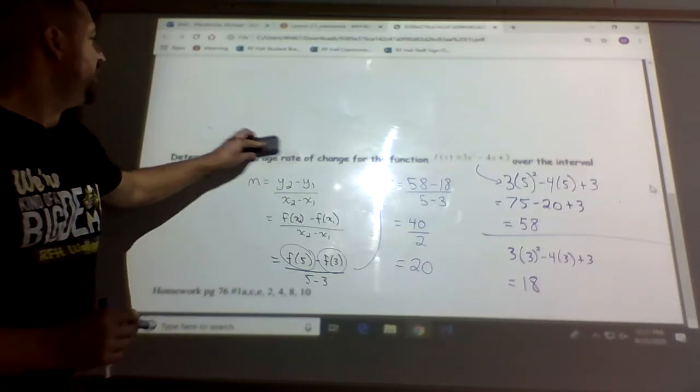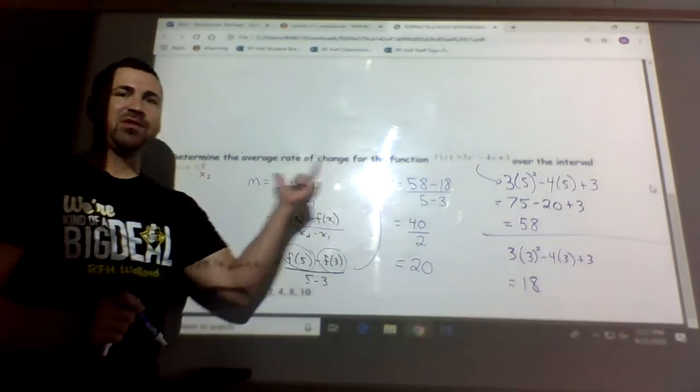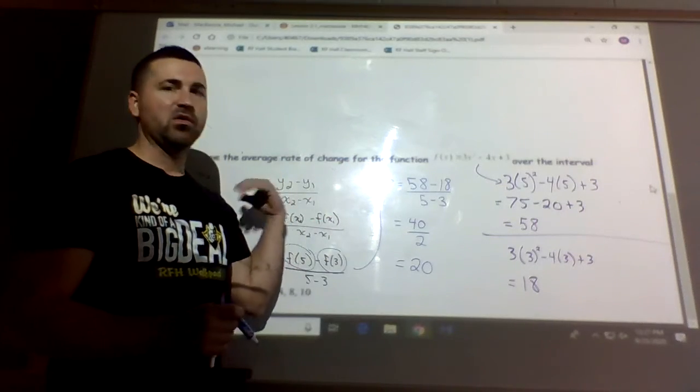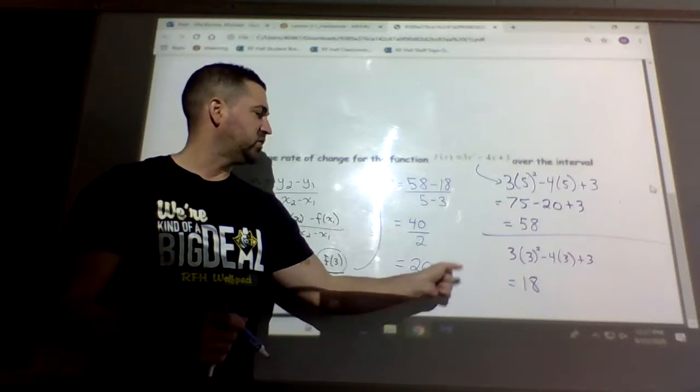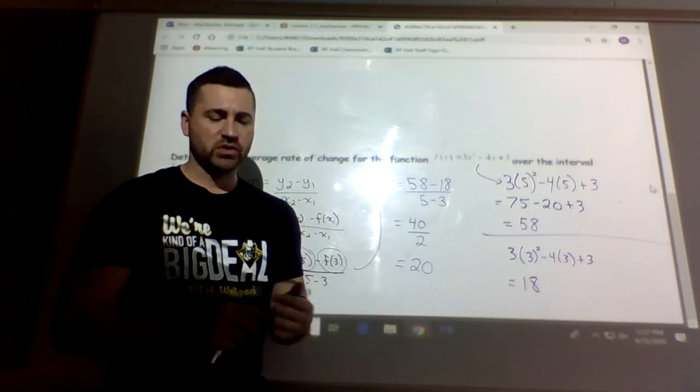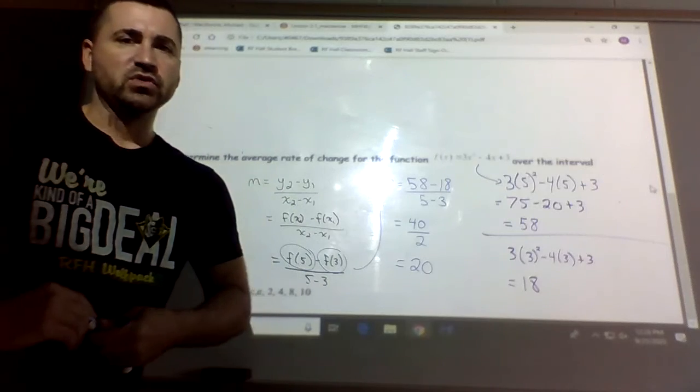So the average rate of change for the function over that period of time, from x equals 3 to 5, not time but over that interval, is 20. We don't have any units or any rates, so right now it's just 20 is the average rate of change.